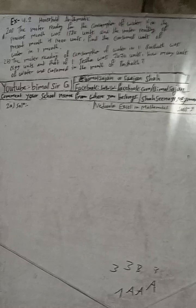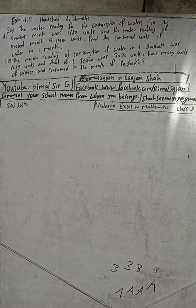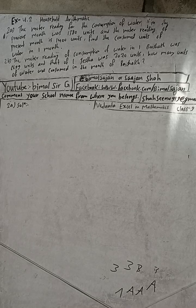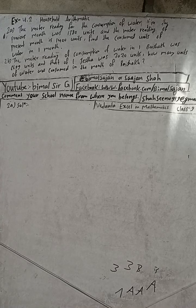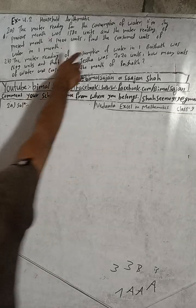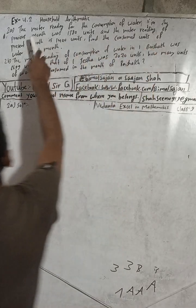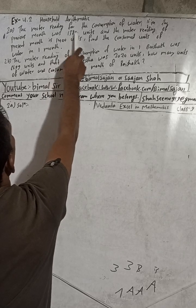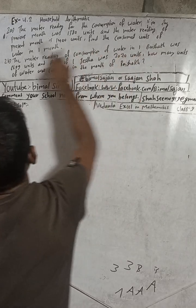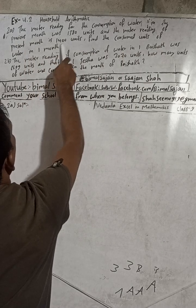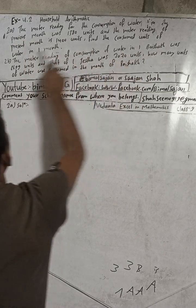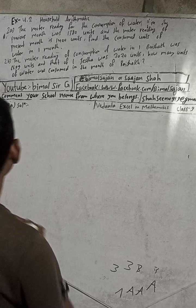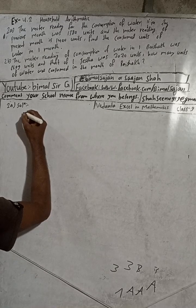Hi Class 9 and 10 students, welcome back to Bimbal Sarji YouTube channel. This is question number 2a, exercise 4.2 from Vedanta Excel in Mathematics Class 9. The question is: the meter reading for the consumption of water in the previous month was 1380 units and the meter reading of the present month is 1400 units. Find the consumed units of water in a month.